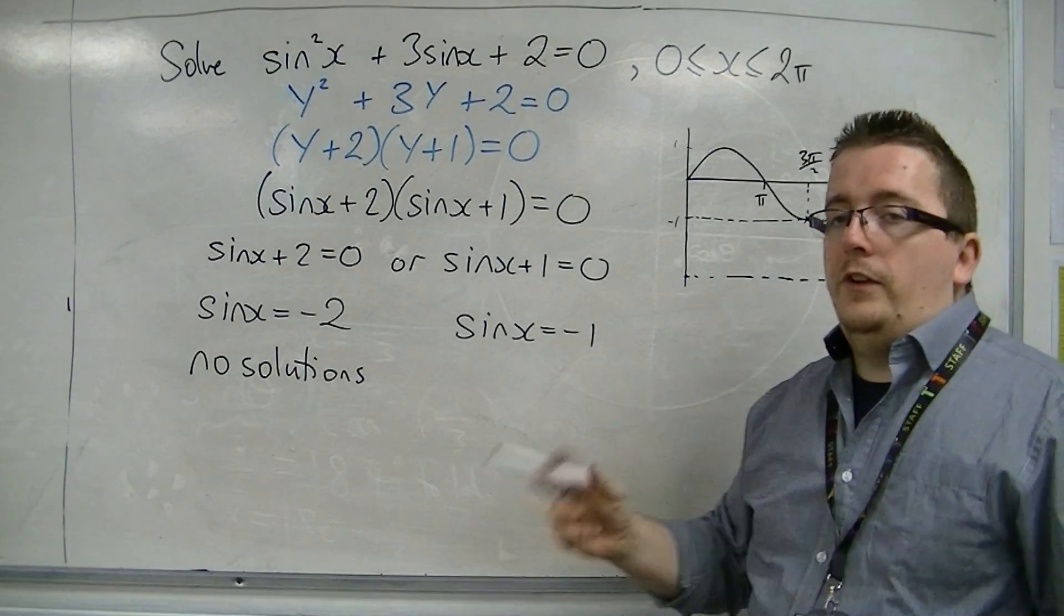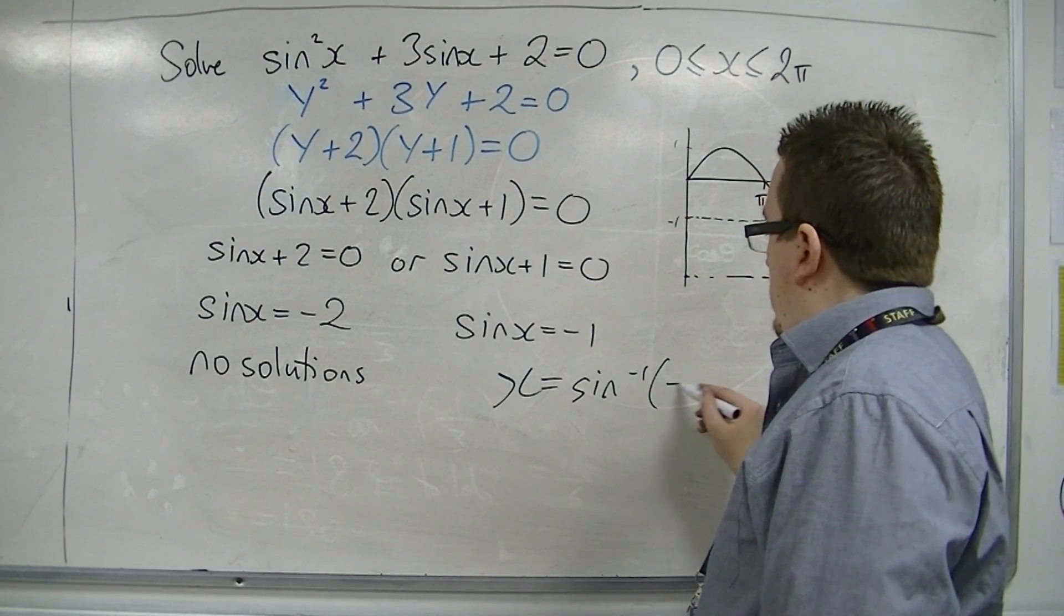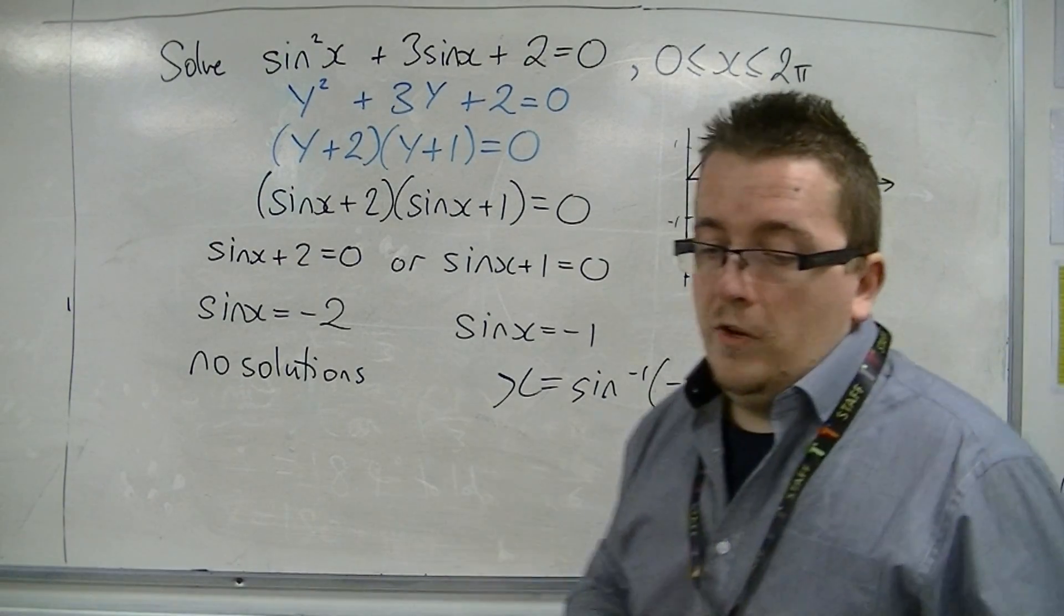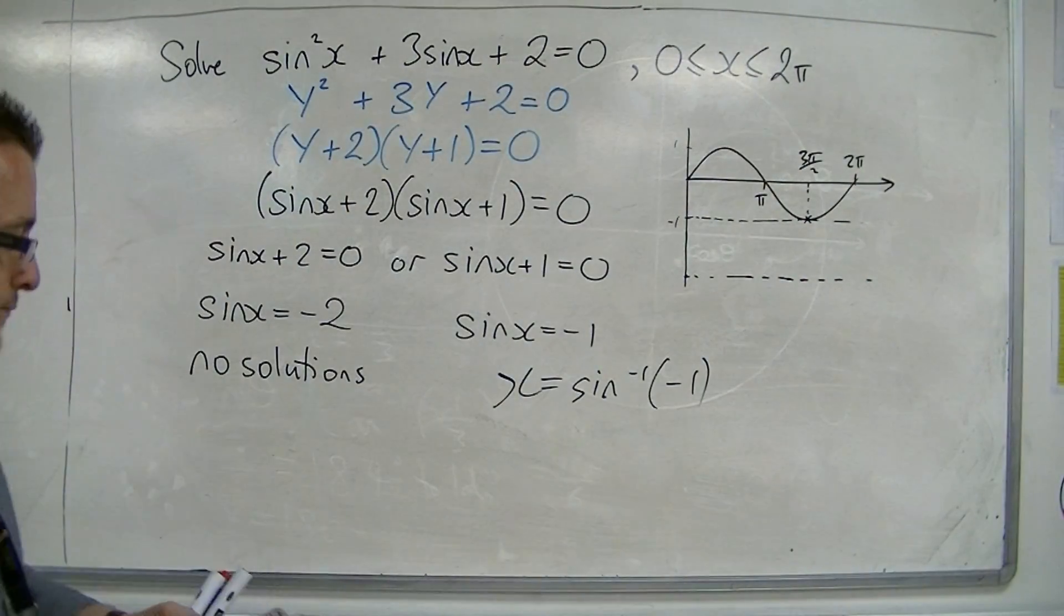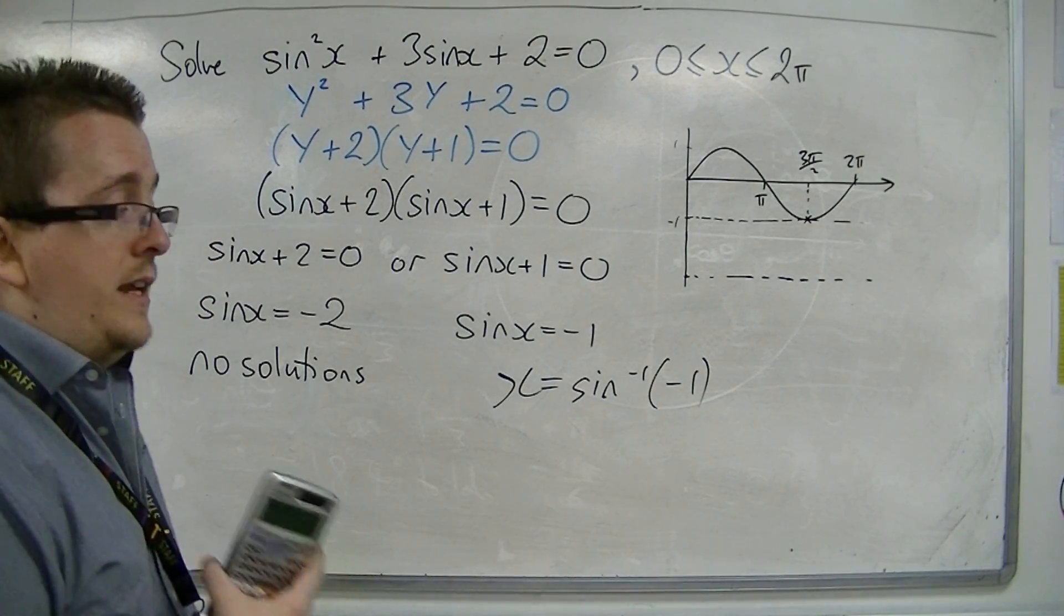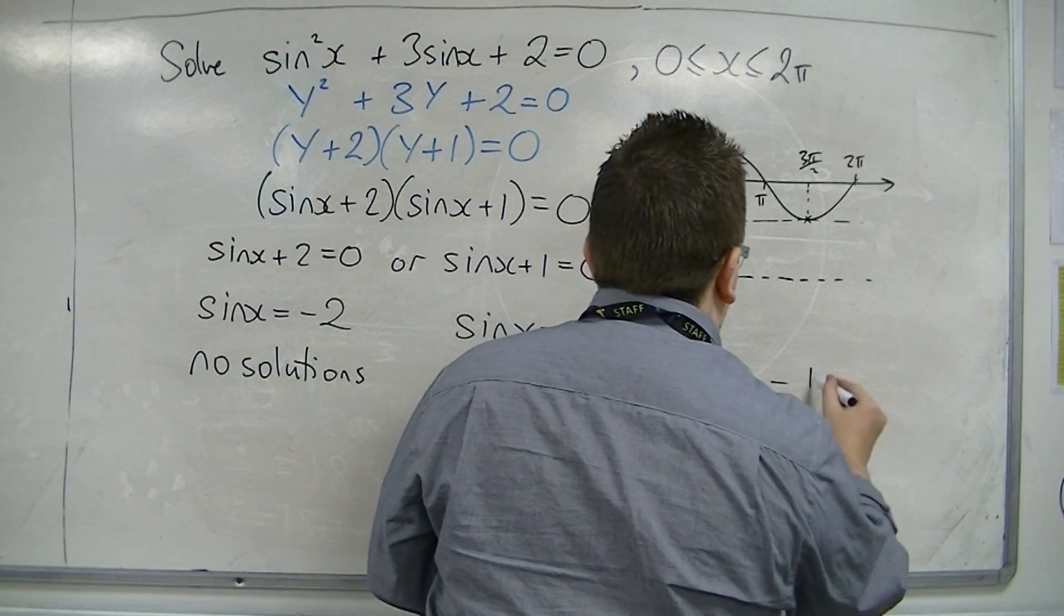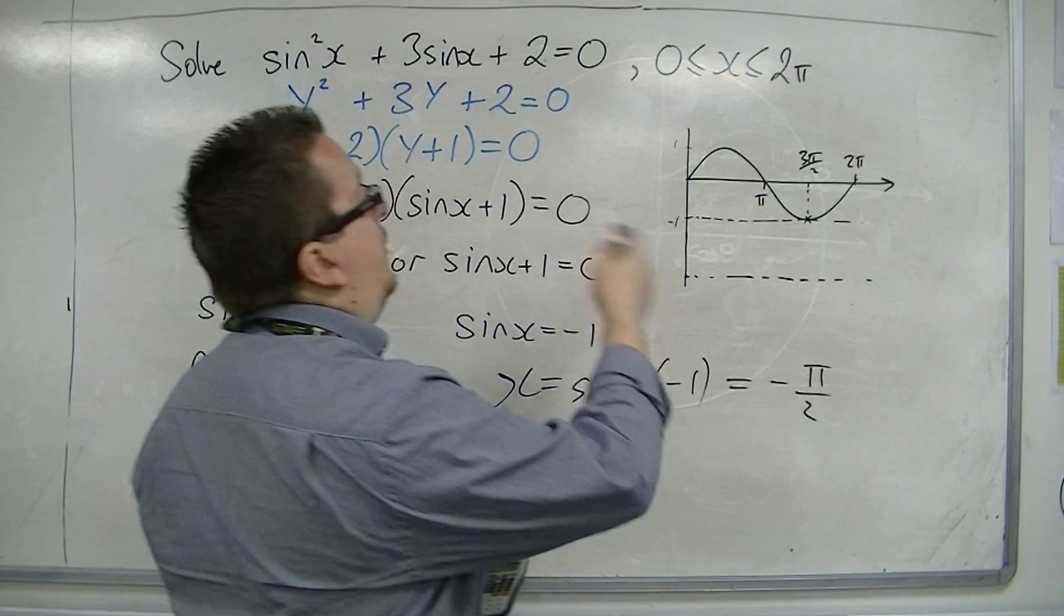If you inverse sine minus 1, let's see what the calculator gives. Now, inverse sine of minus 1. Ah, now that gives you minus pi over 2, right? But that is outside the range.